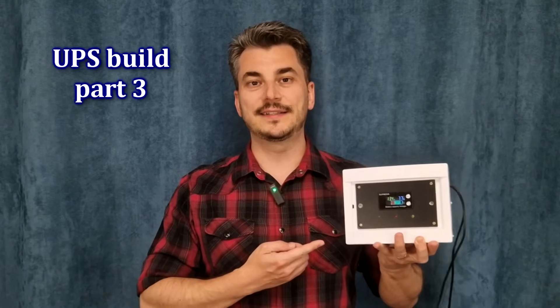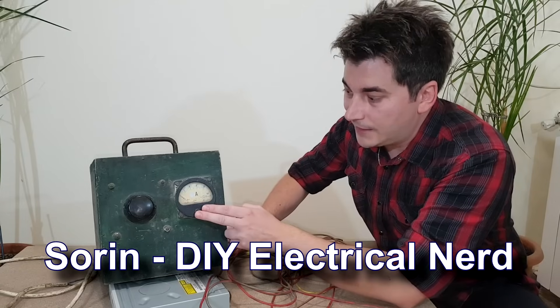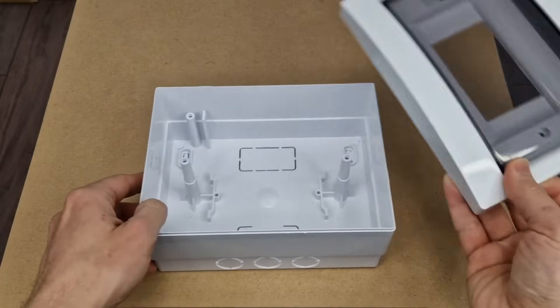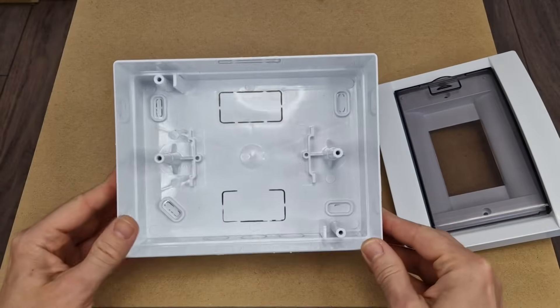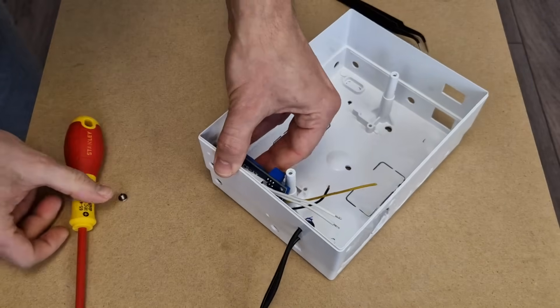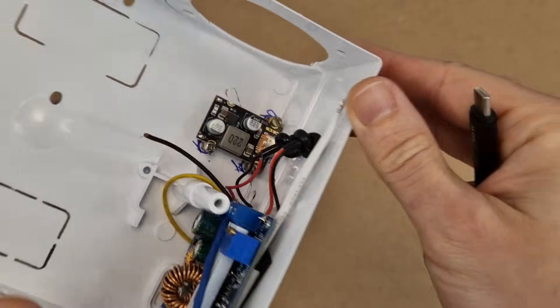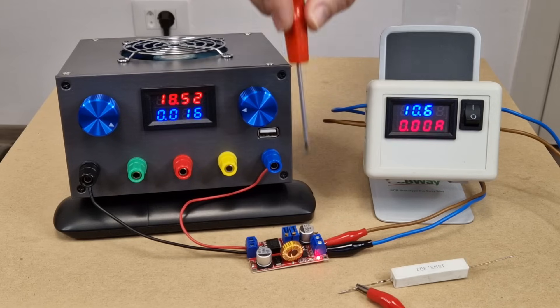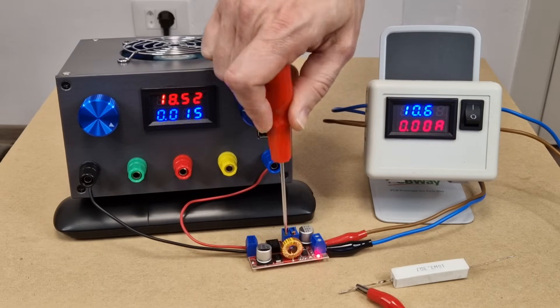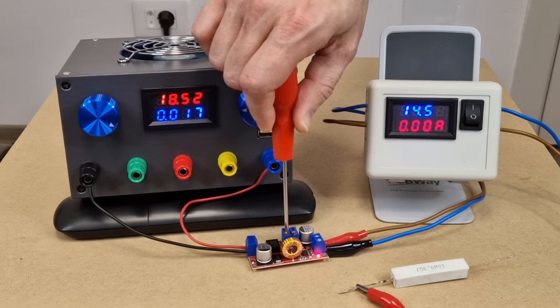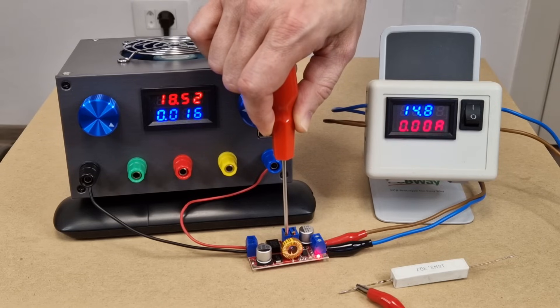Hello my friends and welcome to part 3. Today I will finish building the new UPS. In the previous episode I modified the UPS enclosure and installed the DC converters for the three outputs: 12V, 5V, and a USB Type-C with fast charging protocols. To charge the lithium iron phosphate battery I will use another constant current constant voltage buck converter and I will set the charging voltage to 14.8V for the moment.